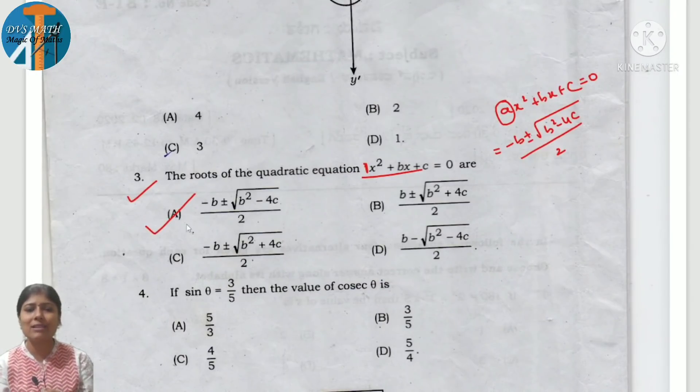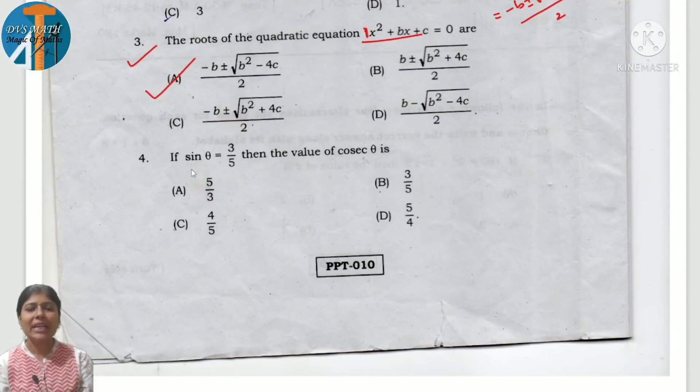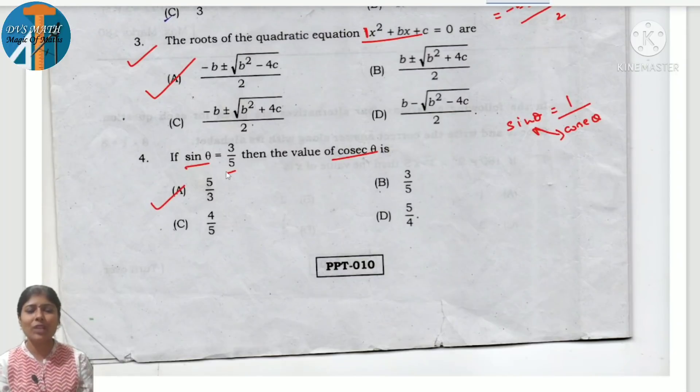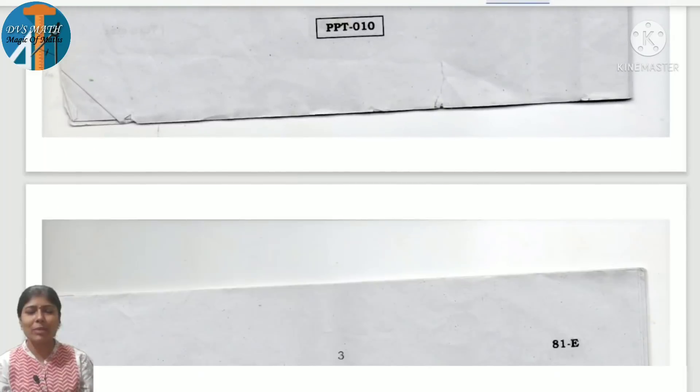Fourth question: if sin theta is equal to 3 by 5, then what is cosec theta? You know sin theta is reciprocal of cosec theta. If it is 3 by 5, then it should be 5 by 3. Option E. So reverse: 3 by 5 becomes 5 by 3.